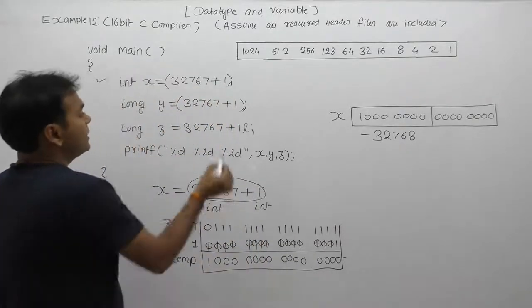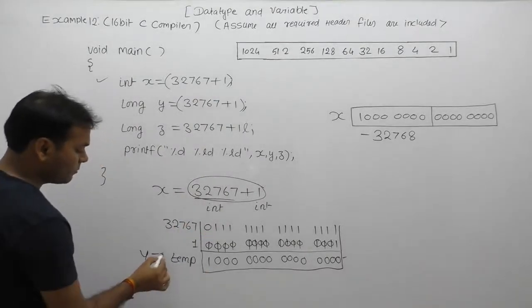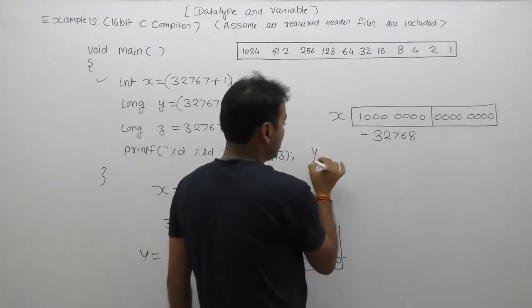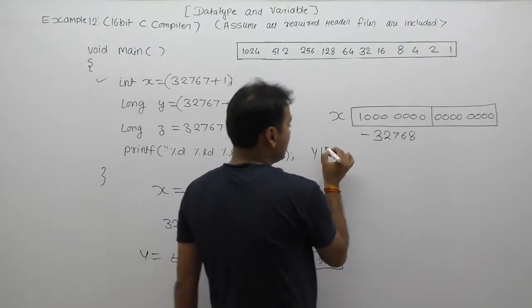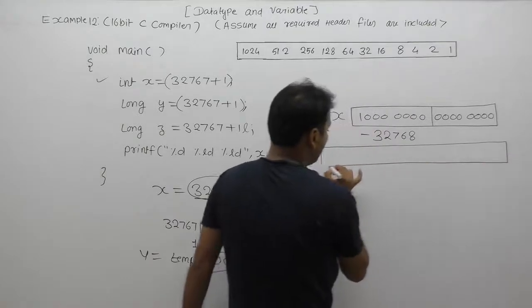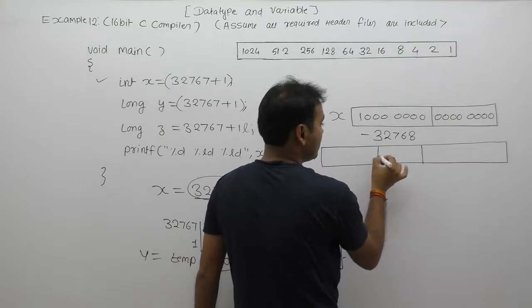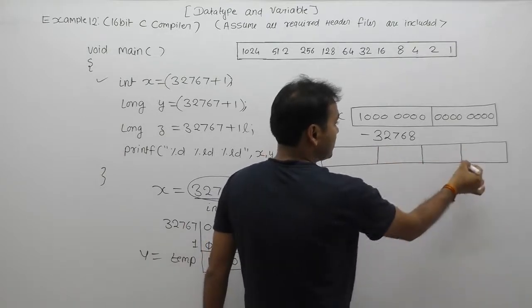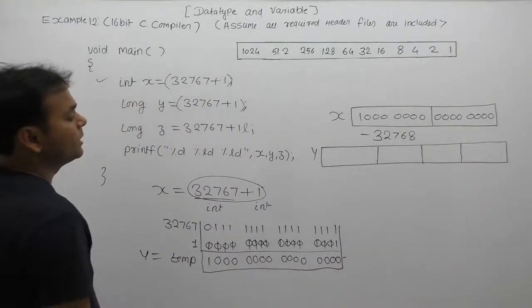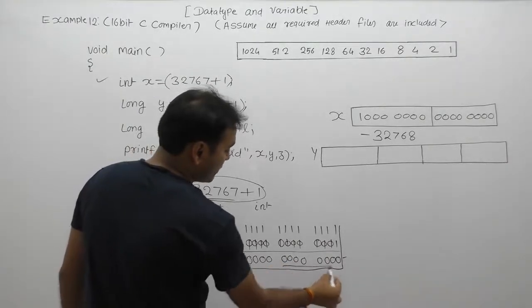Same analysis applies for variable y. Here y is a long type variable. For x, the type was integer, so 16 bits — 2 bytes — were allocated. For y, the type is long; according to long, how many total bytes are allocated for y? There are 4 bytes, which means 32 bits are allocated. Then again same result is stored in y, and the sign bit is 1.